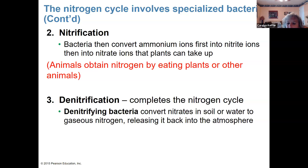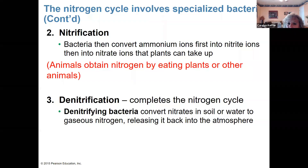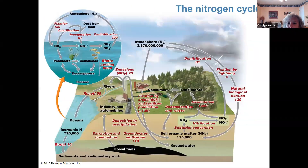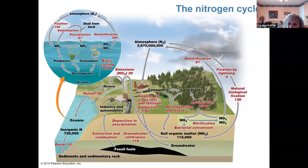Compared to all the other cycles, the nitrogen cycle is unique in that bacteria is really responsible for everything that's happening here. The carbon cycle and water cycle are more direct. The nitrogen cycle also takes place on land and in water. Bacteria plays a central helper role that those other cycles don't have.